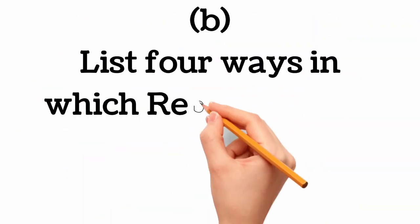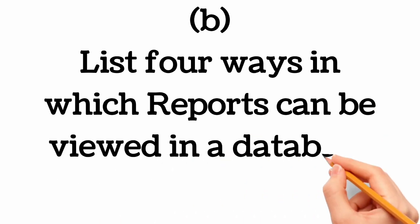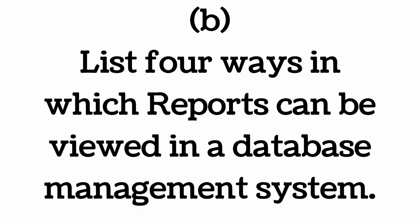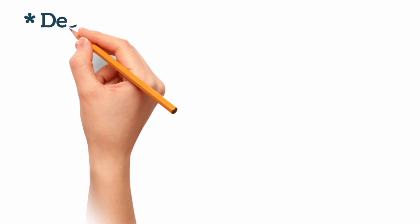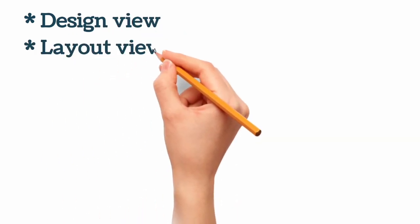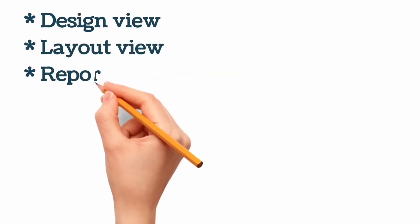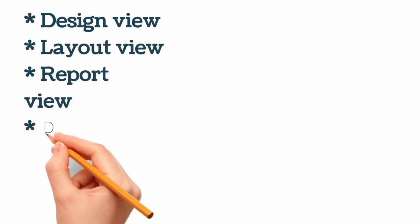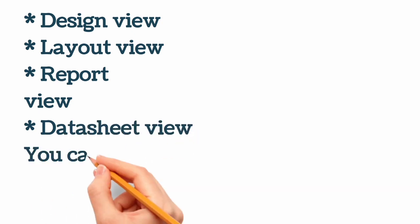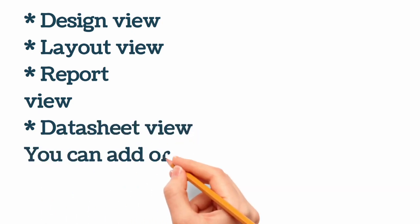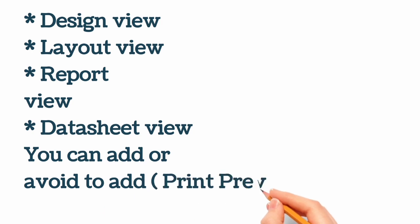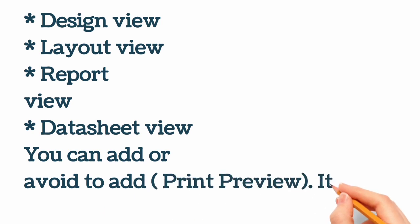Moving on to 1b: in which views can reports be viewed in a database management system? One: the design view. Two: the layout view. Three: the report view. Four: the datasheet view. Print preview can also be added and is correct.